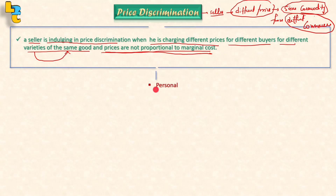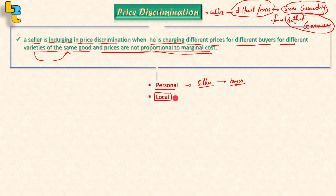Price discrimination is of three types. One is personal price discrimination — when our seller charges different prices from different buyers. The second type is local price discrimination — when the seller charges different prices in the domestic market versus the foreign market. The third type is according to use or trade.